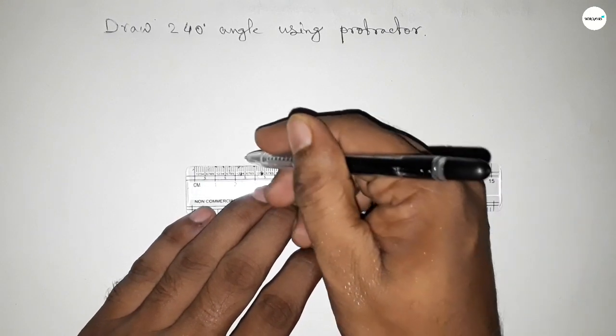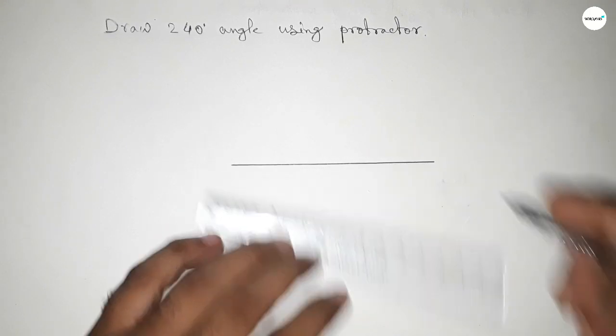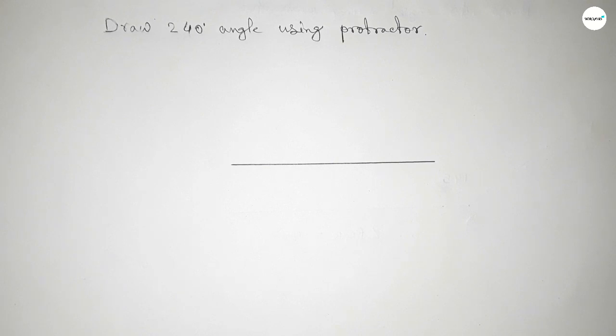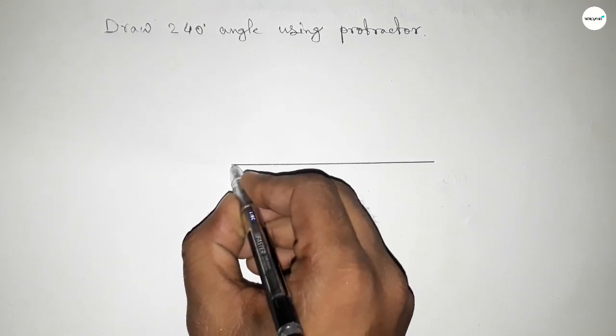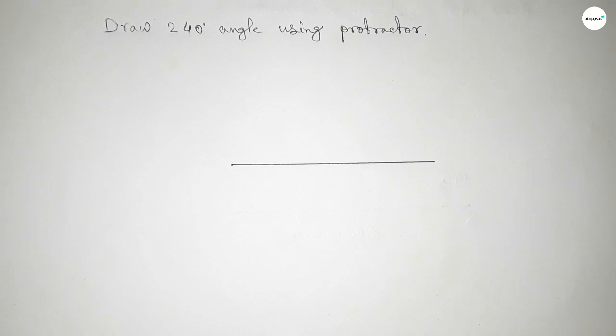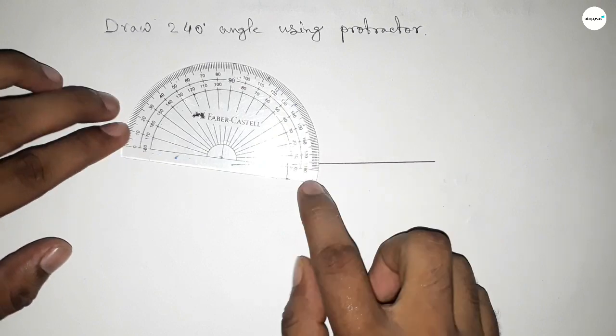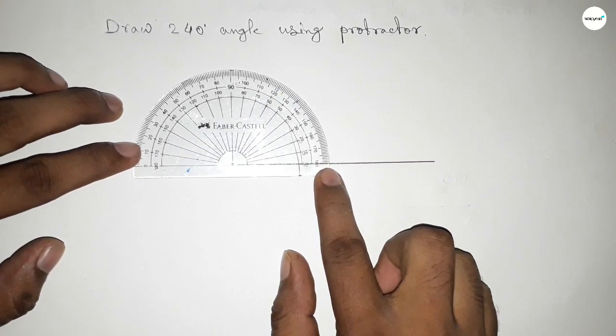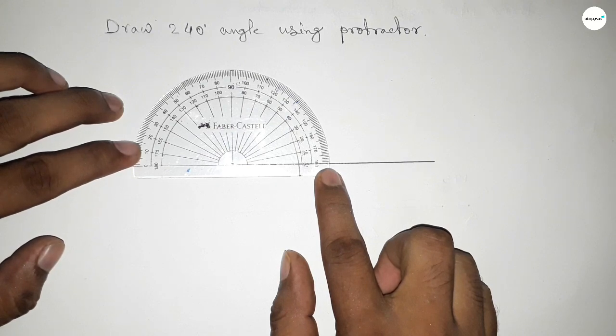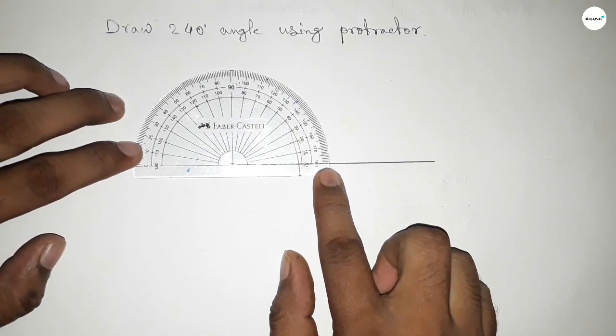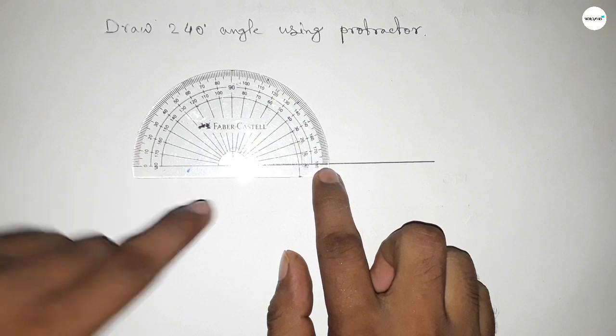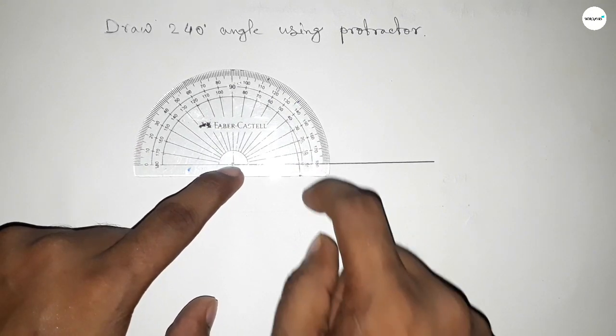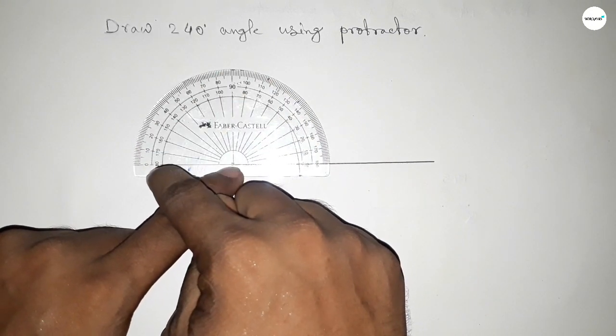Of any length, so first drawing a line here. Next, pointing out here to draw 240 degrees, now putting the protractor on this line perfectly. Next, we have to count the angle, so this is up to 180 degrees.